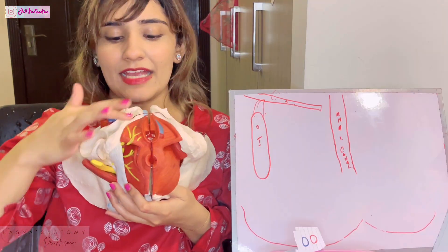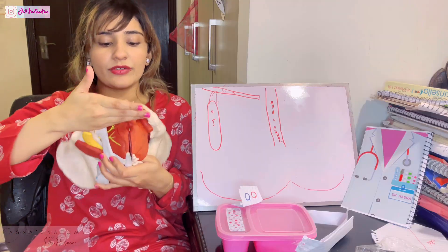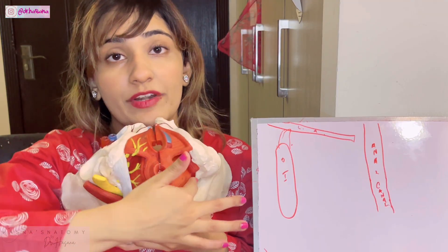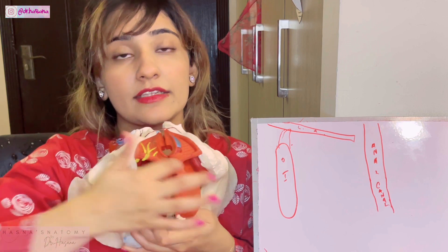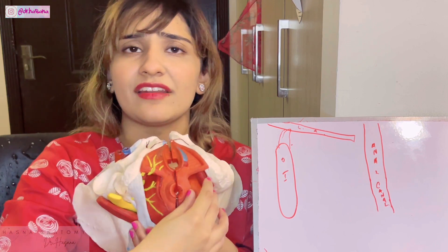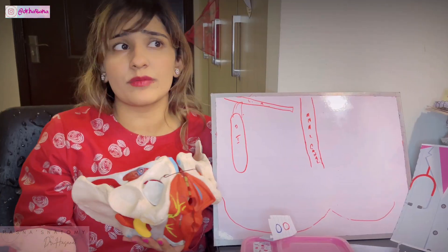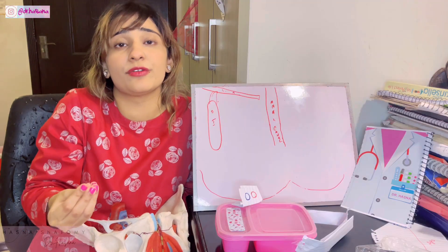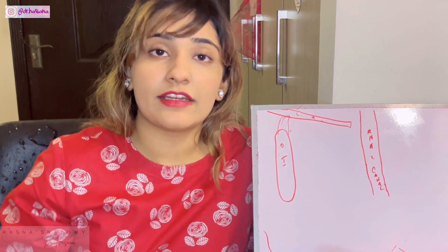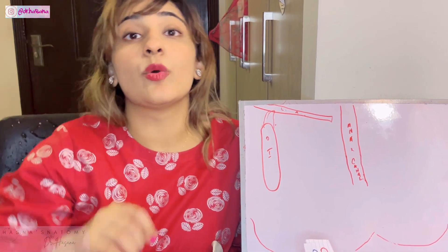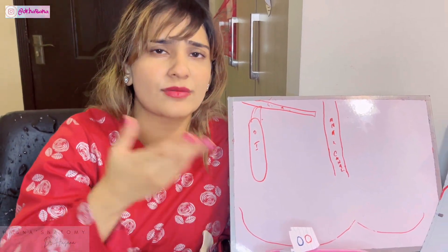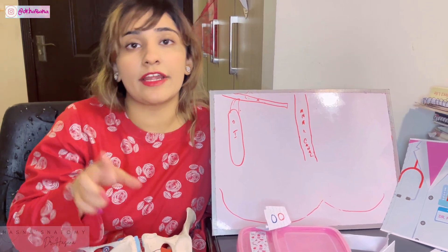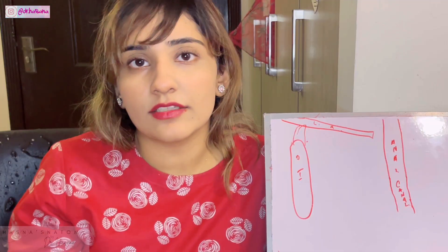This is the perineum — you can see it's a diamond shape. We're talking about the region that lies with the anal canal; this is the anal opening. On either side of the anal canal there are empty spaces. These empty spaces are known as the ischioanal fossa. So now you know the definition: the ischioanal fossa is an empty space located on either side of the anal canal. That's all you need to know.